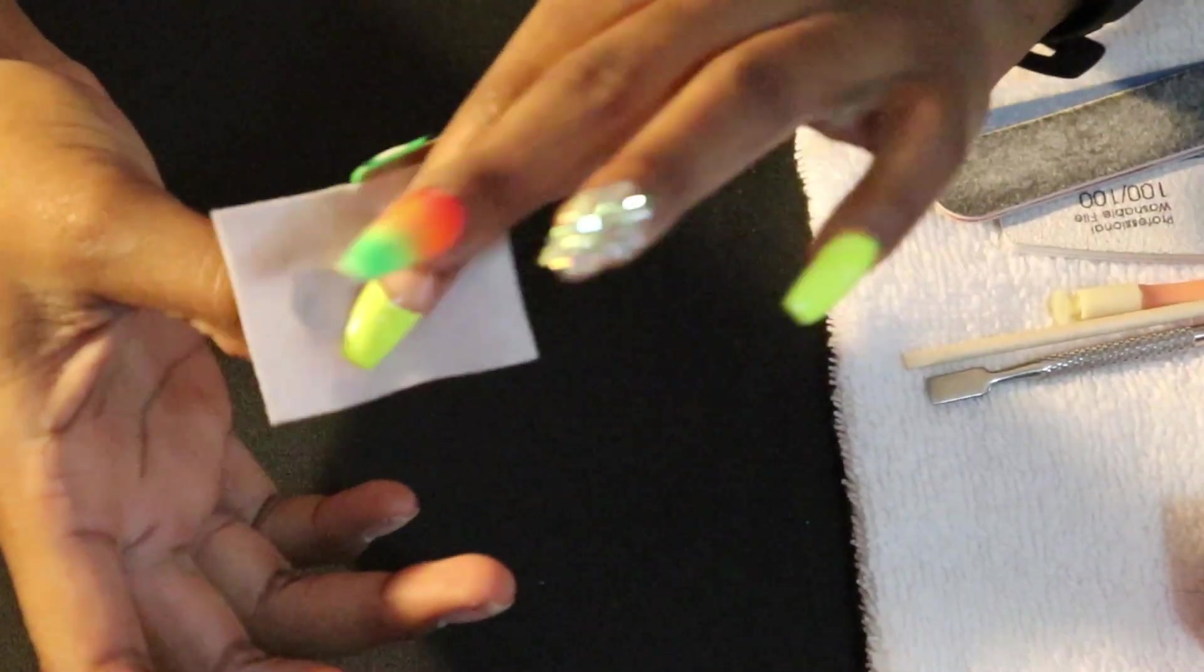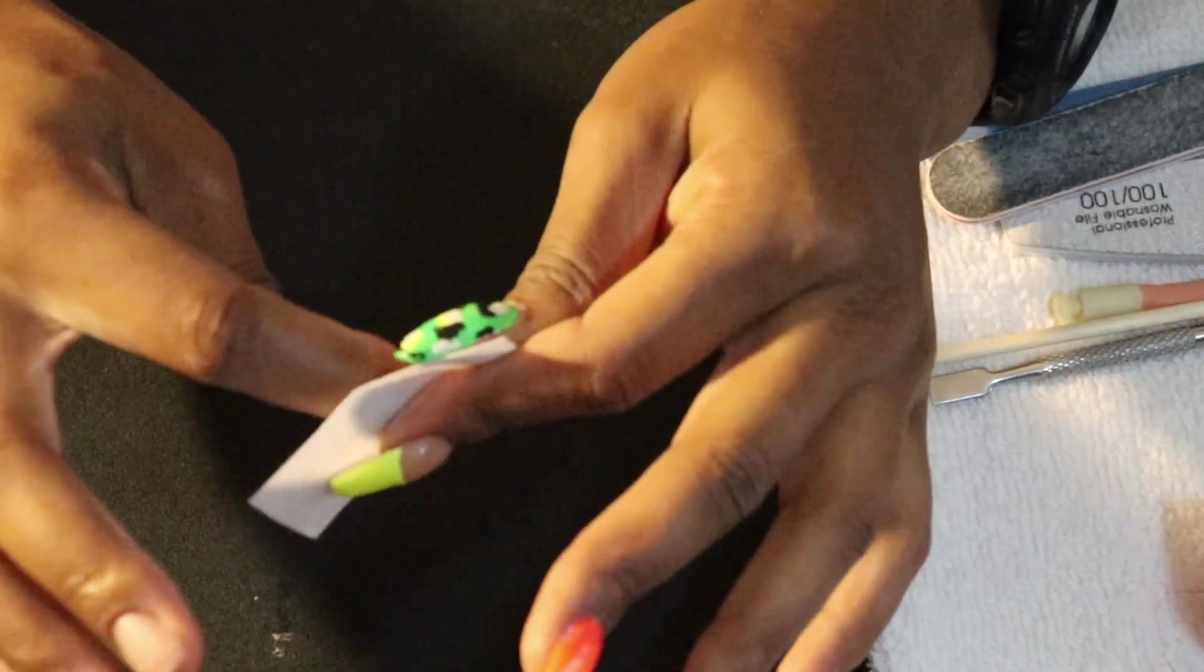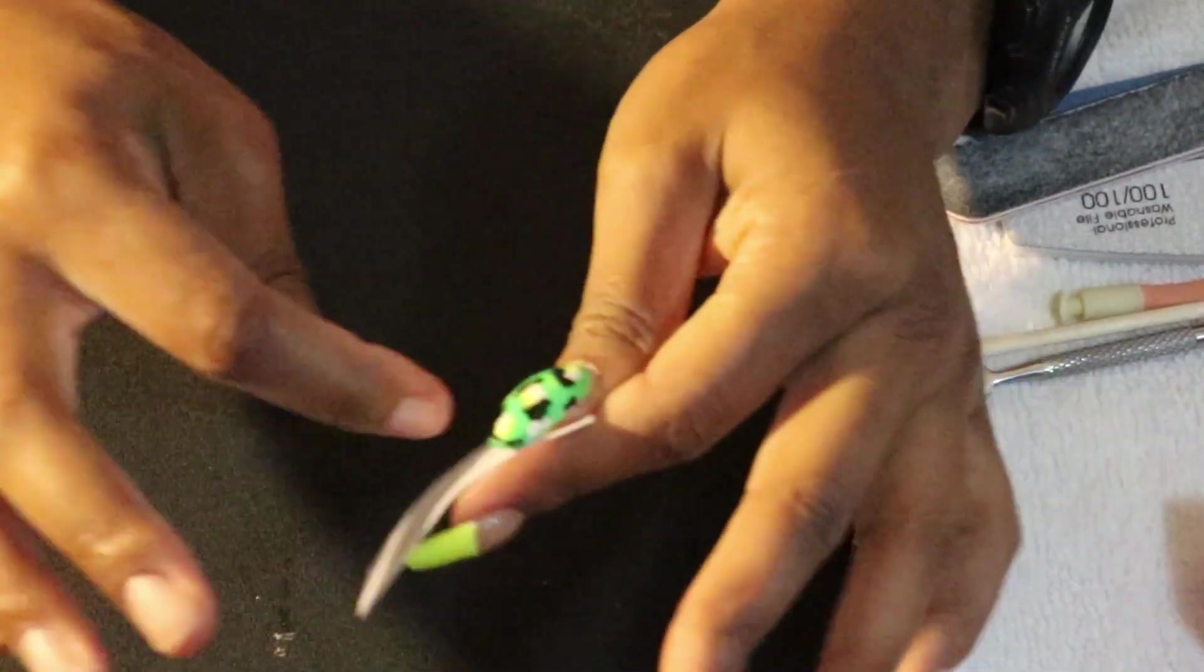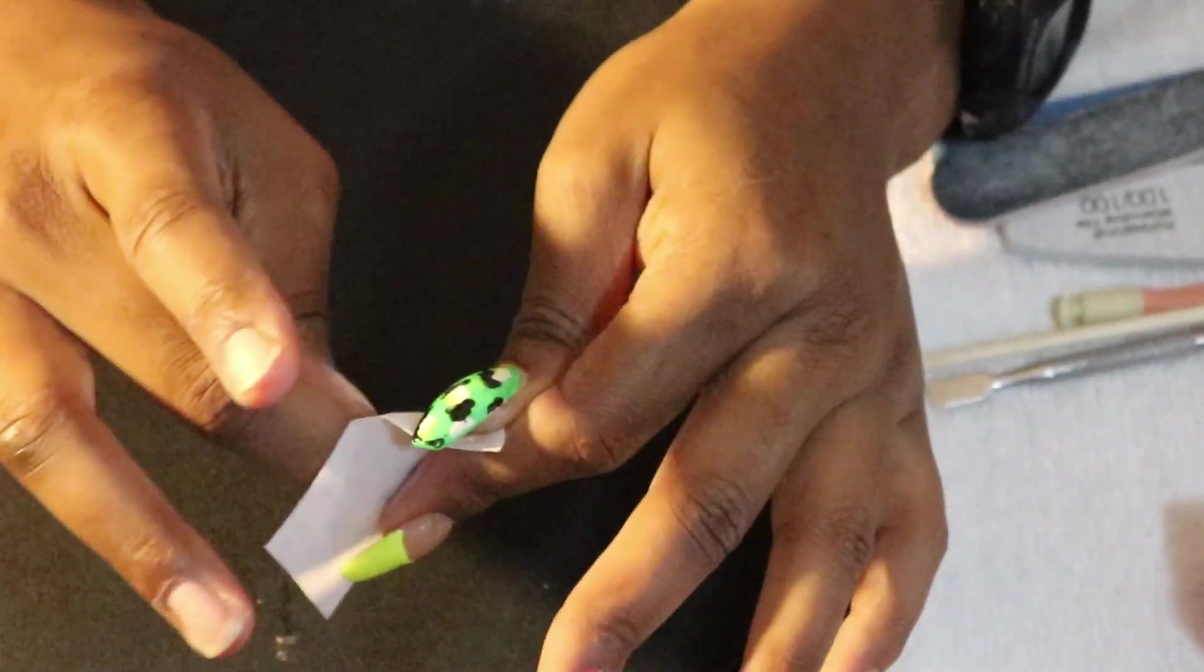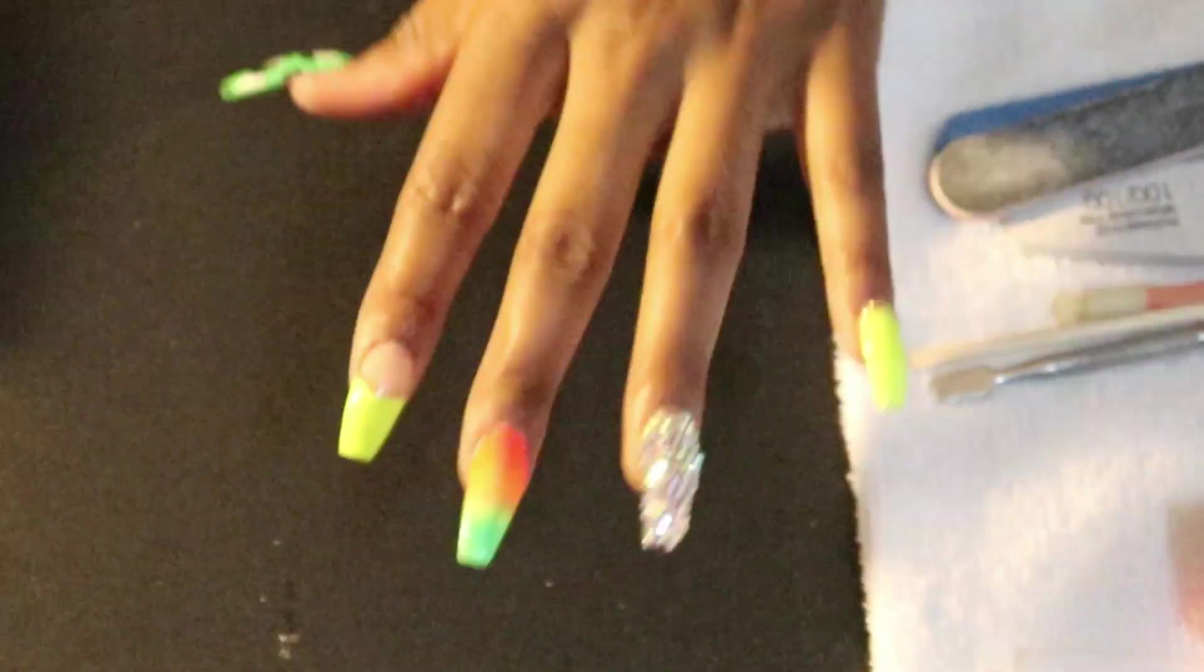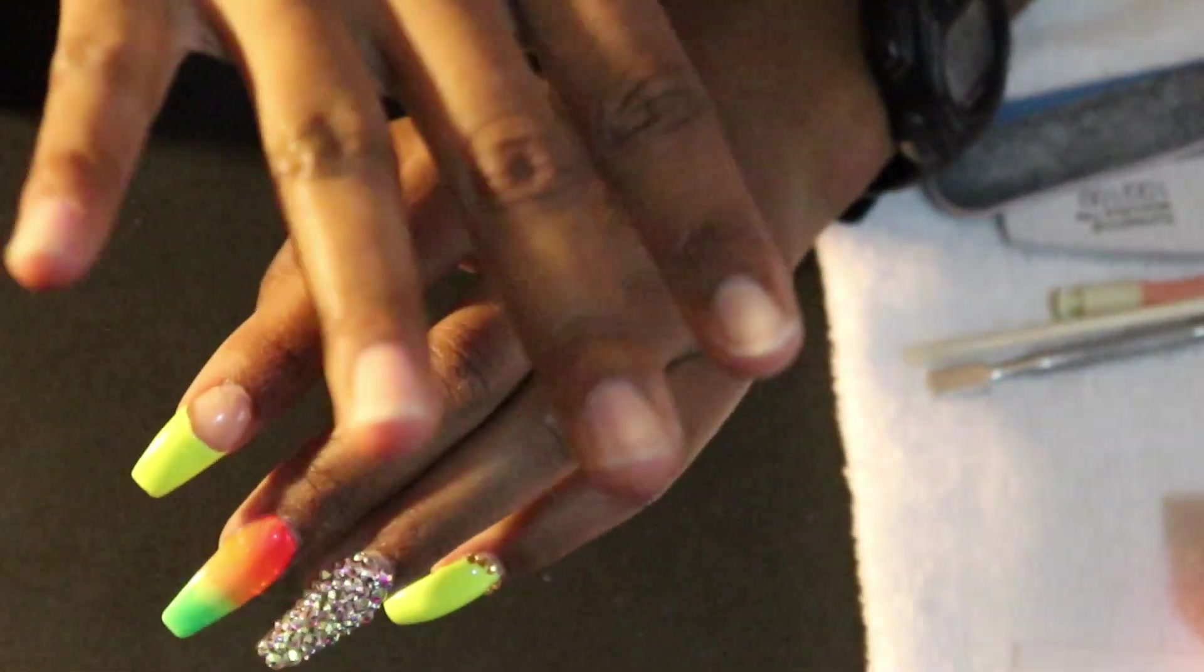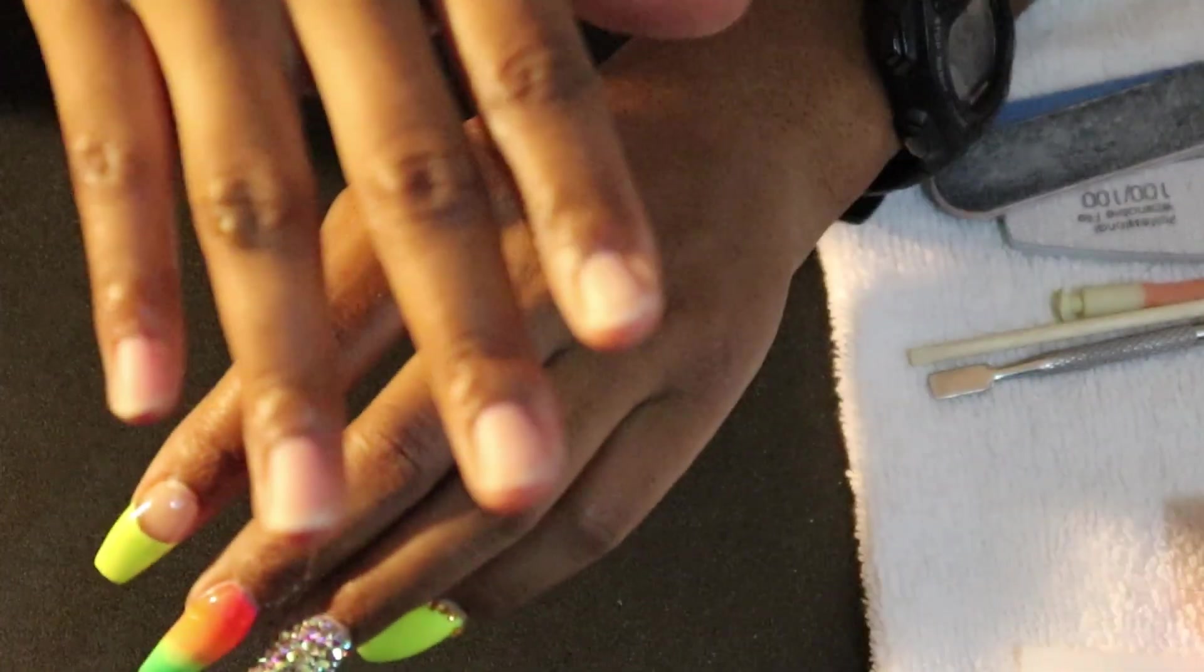Next, I'm going to get some acetone on this wipe and clean my nails from any oils. Even the soap that you use contains oil, so you want to make sure that's all cleared off. Alright, and here I am. Nails are prepped and ready to go.